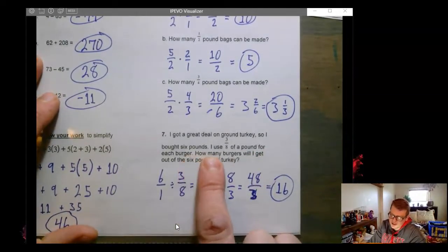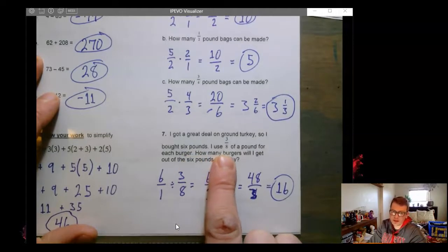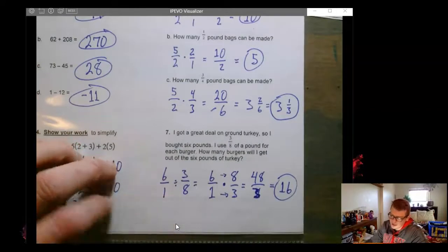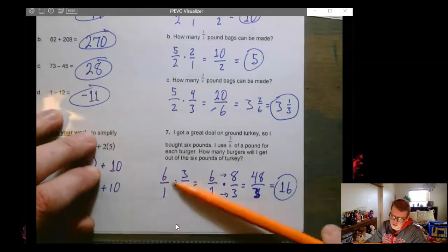So I have six pounds. We're going to divide that up into three eighths of a pound burgers. So six divided by three eighths. Again, we're going to keep, change, flip. So six over one, because anything can be put over a one.